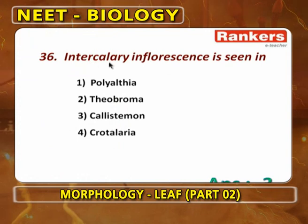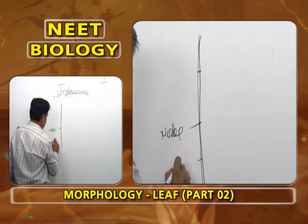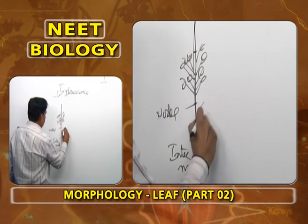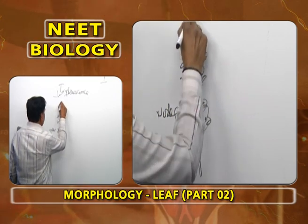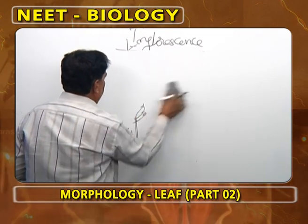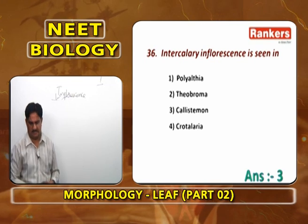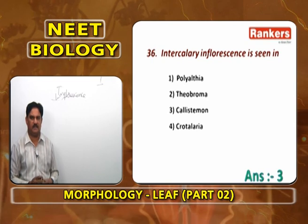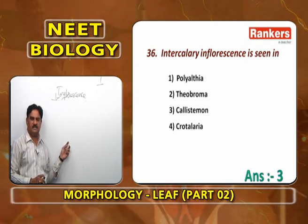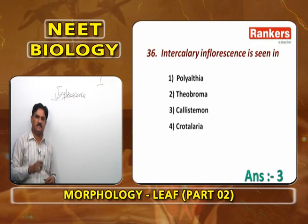Intercalary inflorescence: the inflorescence develops on the internodes and the growth of the stem continues after inflorescence formation. It is found in Callistemon. Theobroma shows cauliflory — formation of flowers on an old stem. Crotalaria has terminal simple raceme inflorescence. So Callistemon is the plant with intercalary inflorescence.